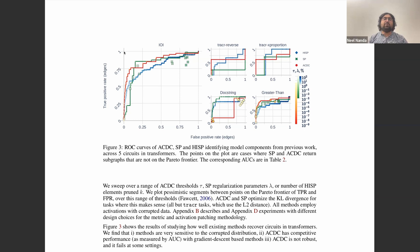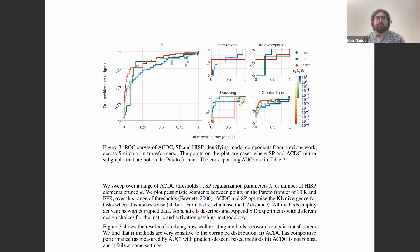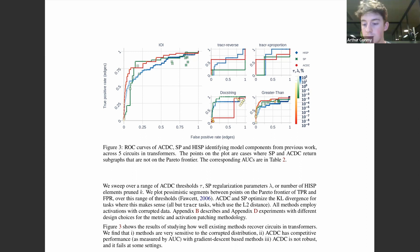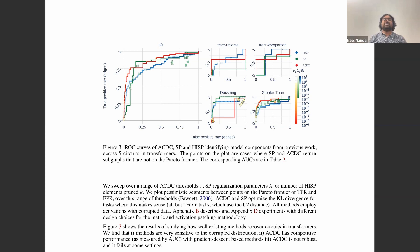Why is true positive rate not enough on its own? Because you can achieve true positive rate one with false positive rate one by just including every single possible edge. We need some inclusion of lower false positives. There's a Pareto frontier where being more permissive gets you more of the true circuit but also more false things. For any given level of how many edges you want, you can set appropriate thresholds to get the right circuit.